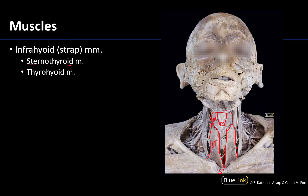Those are the muscles we need to identify in this session. The thorax muscles are larger and a little easier to identify. For the muscles of the neck, it's all about attachment points and understanding where those are located. Thank you for your time and attention. Please reach out if you have any questions, and have a great rest of your day.